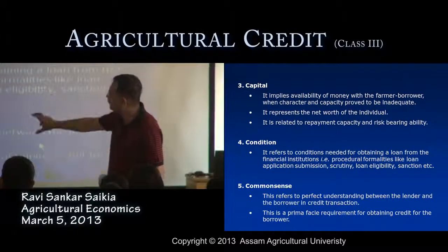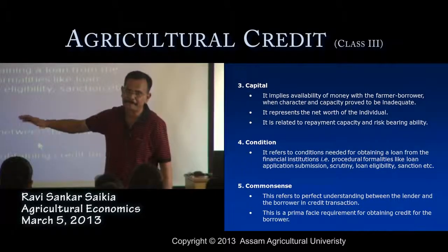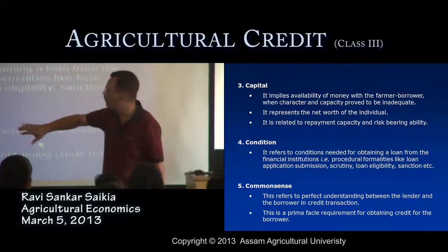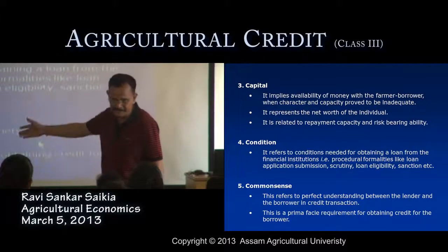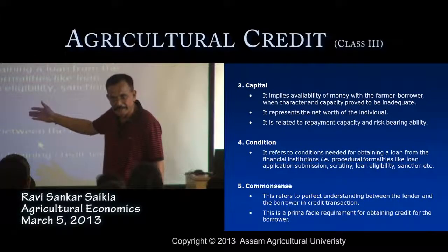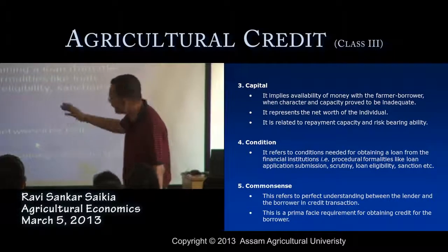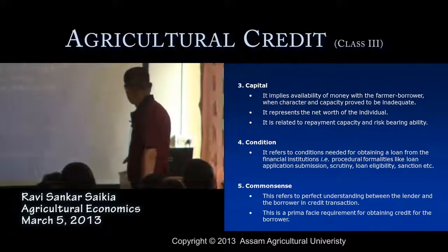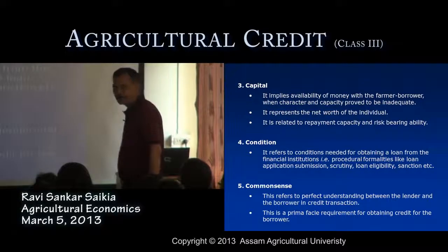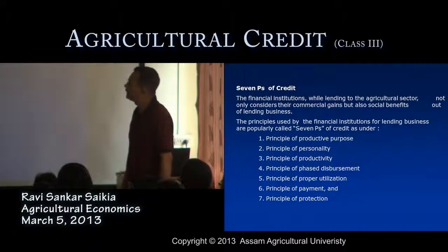All these things are considered in the form of common sense. So these are the five C's of credit, considered from an economic point of view in relation to the economic feasibility test. Some economists also consider this in another way, popularly known as the seven P's of credit.